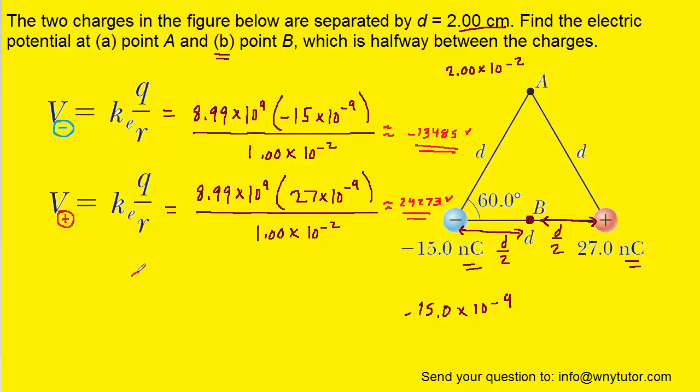To get the total electric potential at point B, all we have to do again is just add these two values together. And when you do that, you get approximately 10,788 volts for the total electric potential at point B.